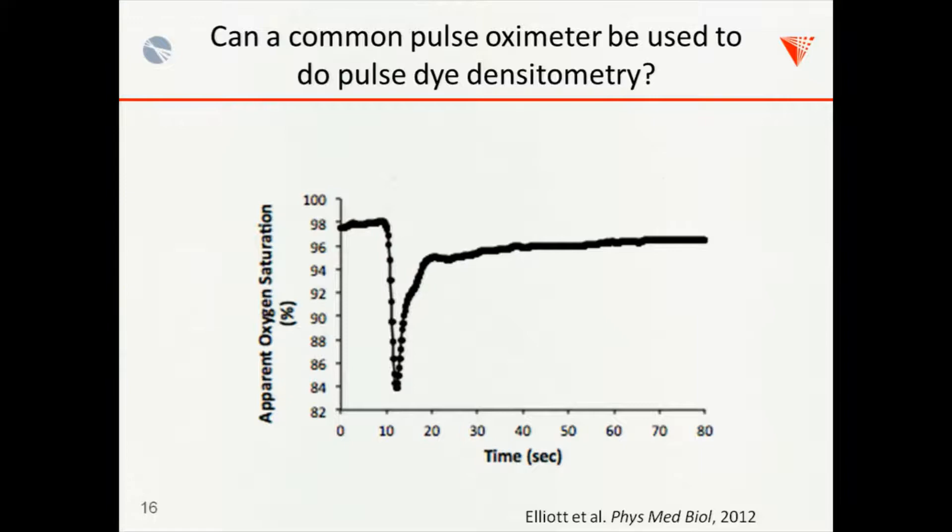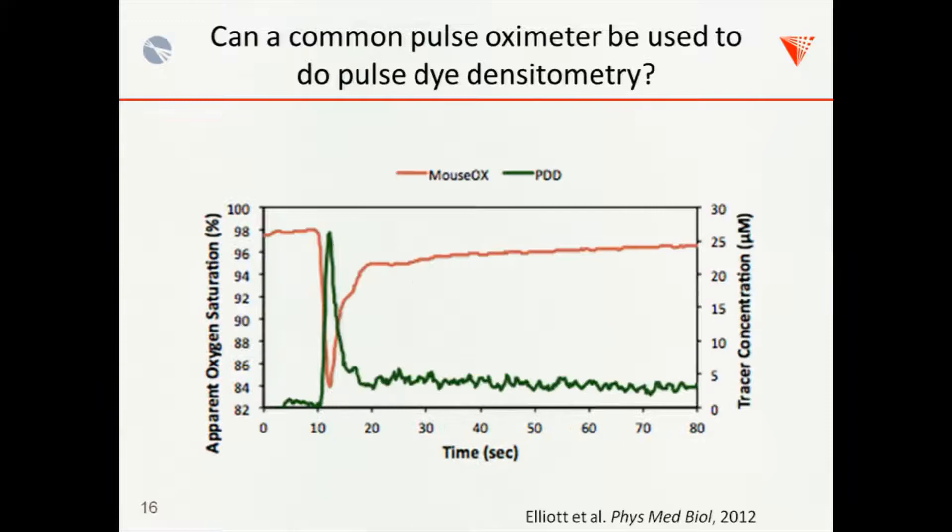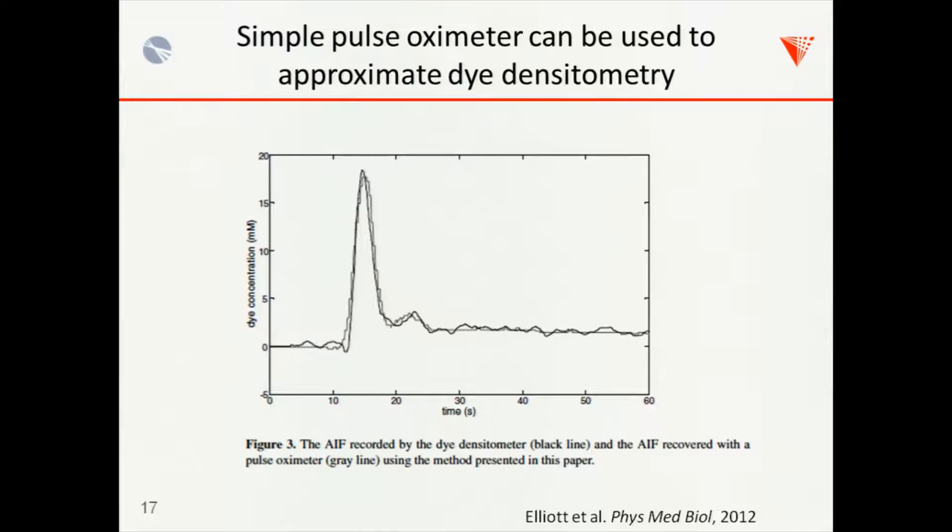One other thing is that you actually don't need that fancy system that the Japanese group designed. If you inject indocyanine green into a regular pulse oximeter that you have on, you'll see that the oxygenation will just change over time and it'll have a very characteristic shape. And so it's really just an error in how it measures the oxygenation. But you can use this error. We just published a paper on this. You can use this error to basically tease out what the arterial input function is. So you don't need a fancy system. You can do it just from a pulse oximeter. As long as your tracer absorbs in one of the wavelengths that the pulse oximeter has in it.